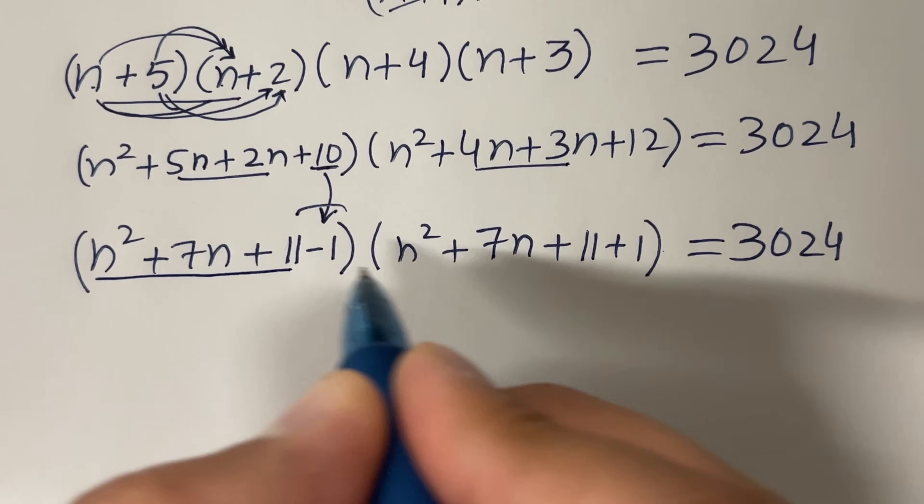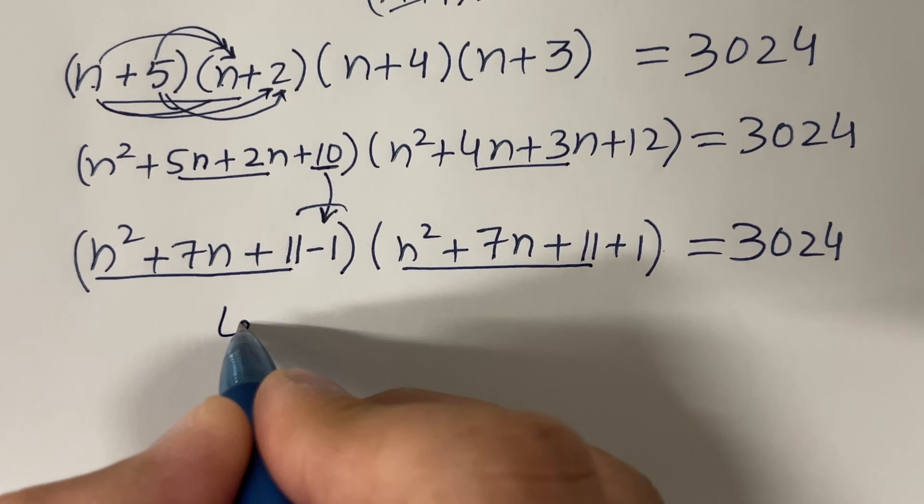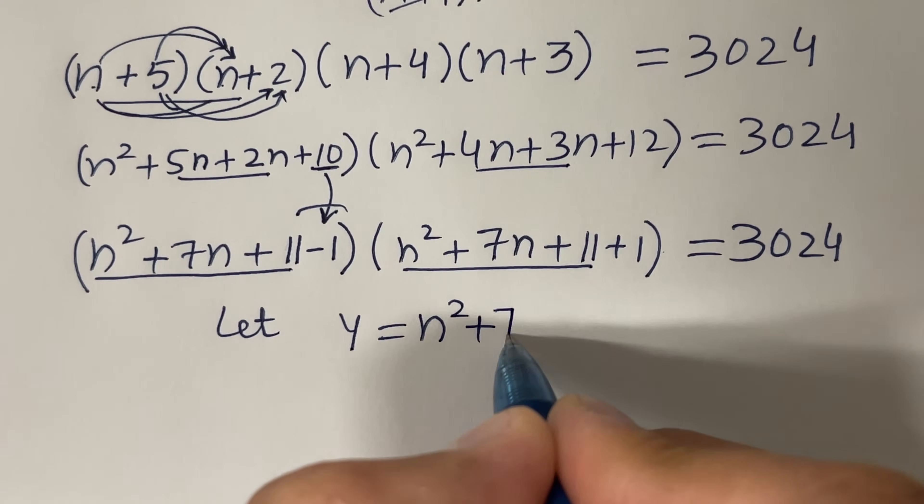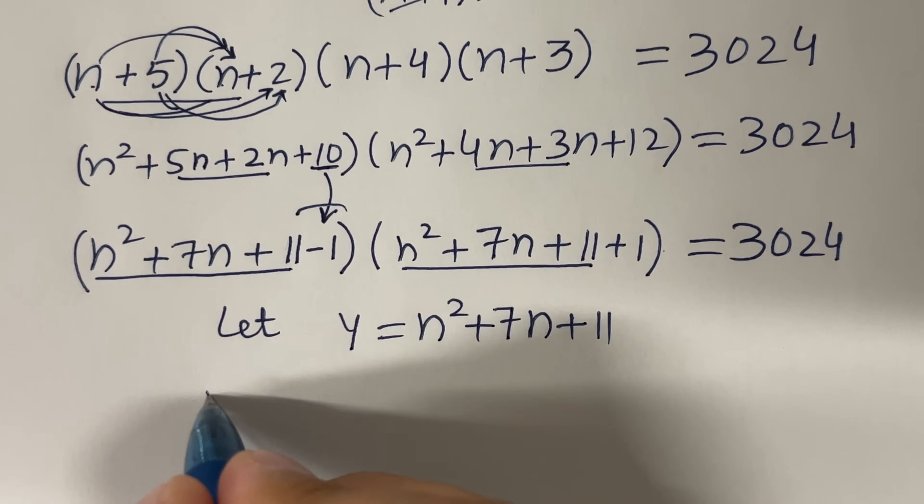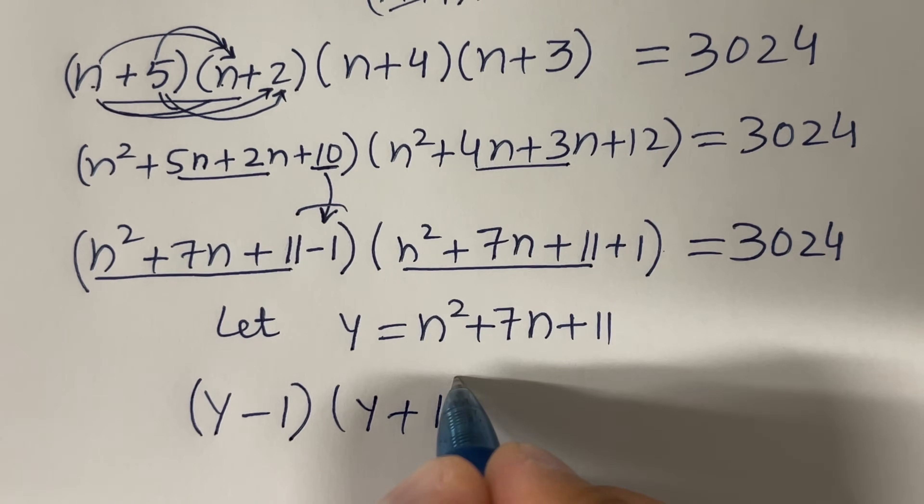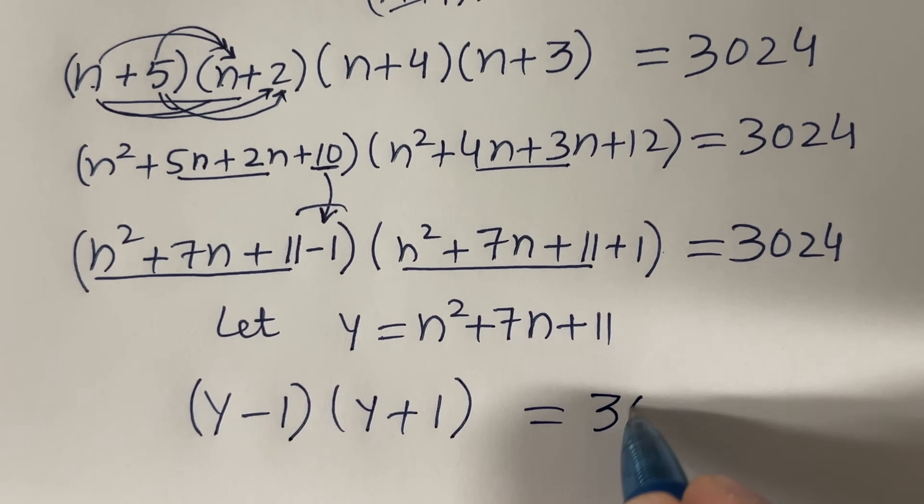Now if you look at here, we have this guy common. Let me use this substitution: y = n² + 7n + 11. Then I will have (y-1)(y+1) = 3024.